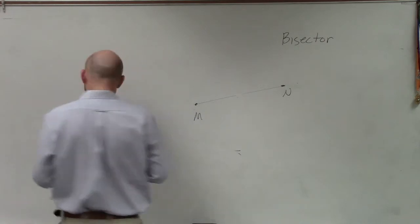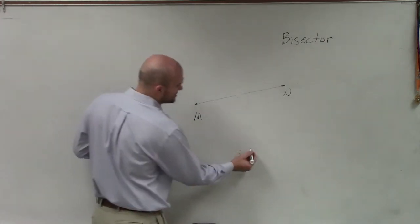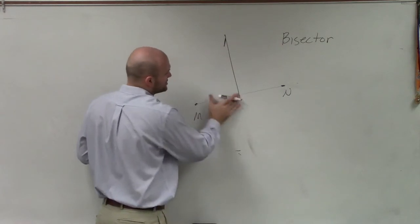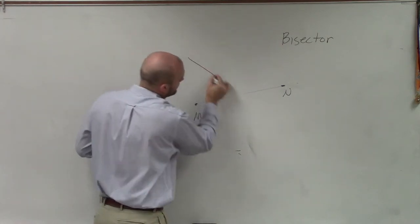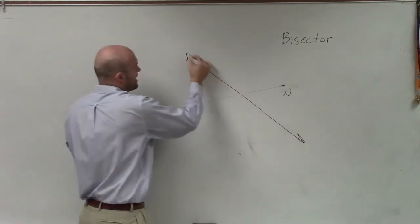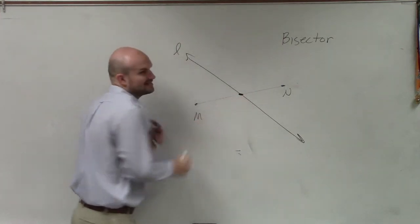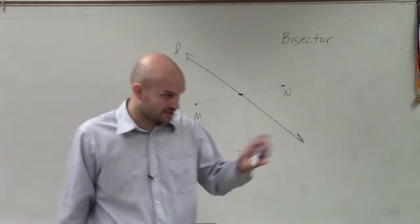So if we have a line segment MN, and we say that there's going to be a line... let's call this line L. And if this line intersects L, it intersects it—it crosses it.